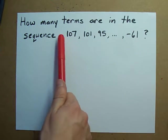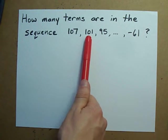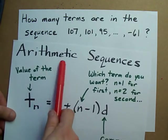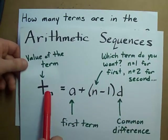Well, we start with 107, and it goes down 6 and down 6 again. That's our hint that it's an arithmetic sequence. And we can use this formula,